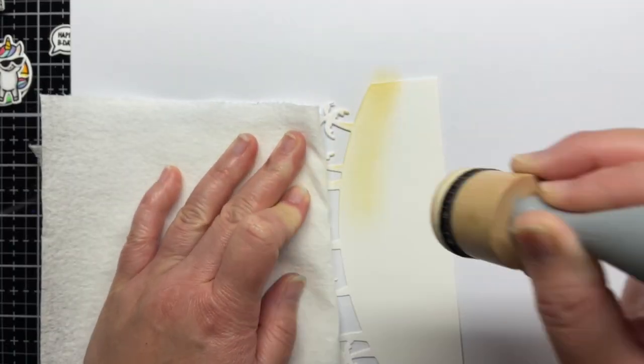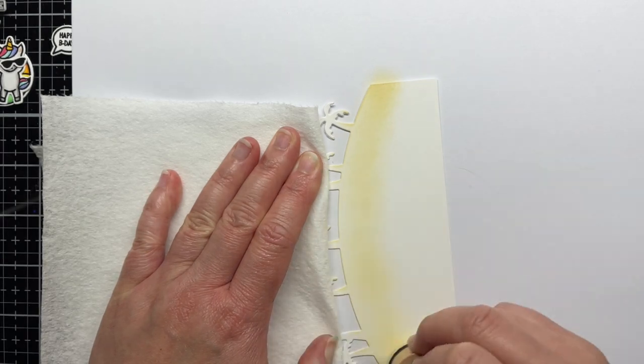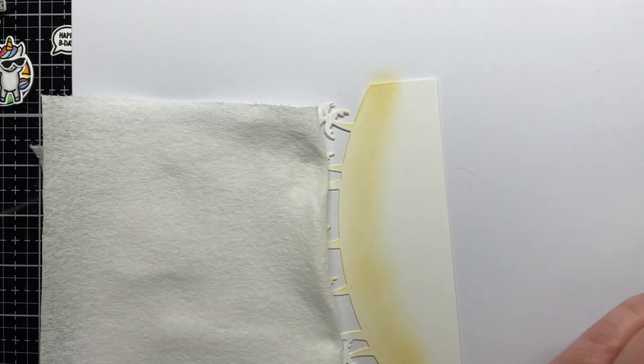I use Antique Linen and Tea Dye Distress Oxide ink for my sandy island. I also blend up the palm tree trunks to give them a little color.